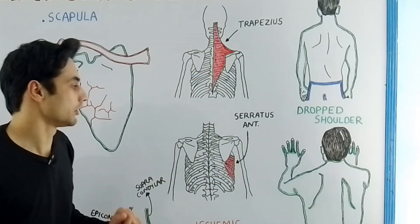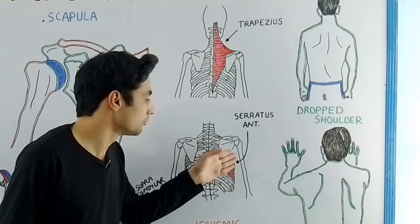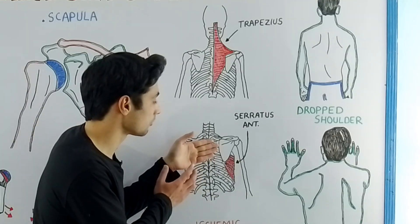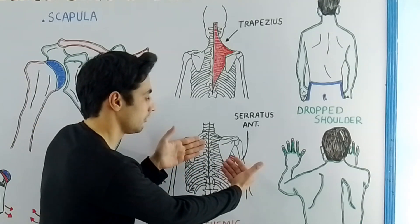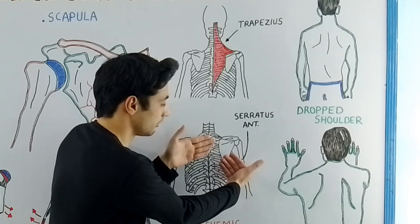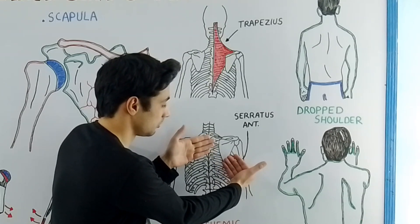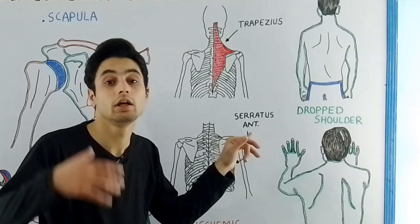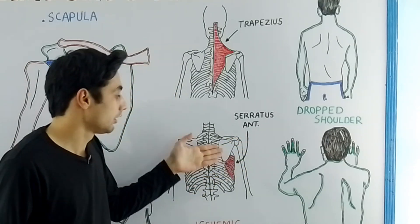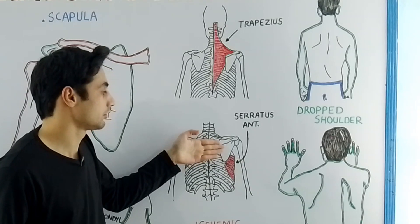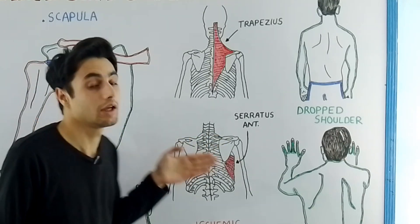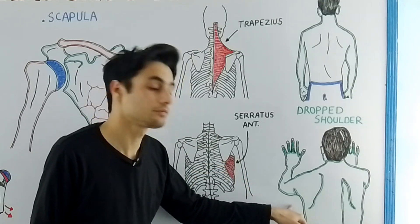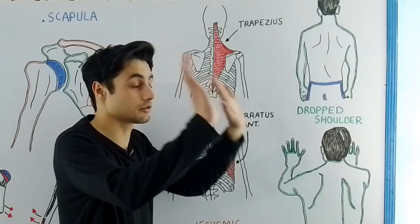The serratus anterior muscle maintains the normal position of the scapula by pulling it laterally and downward, counteracting other muscles that pull the scapula medially. When the serratus anterior muscle is paralyzed or damaged, those muscles pull the scapula bone medially and winged scapula occurs. It can be recognized by putting your hands on the wall.